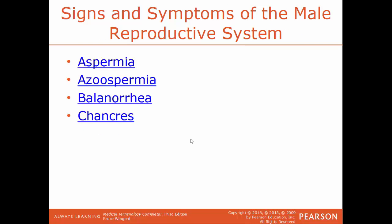Specific signs and symptoms of the male system: aspermia is the inability to produce or ejaculate semen. Semen includes not just sperm cells but also secretions from the seminal vesicles, the prostate glands, and the bulbal urethral glands — all collectively known as semen. Aspermia means not being able to produce or ejaculate semen.